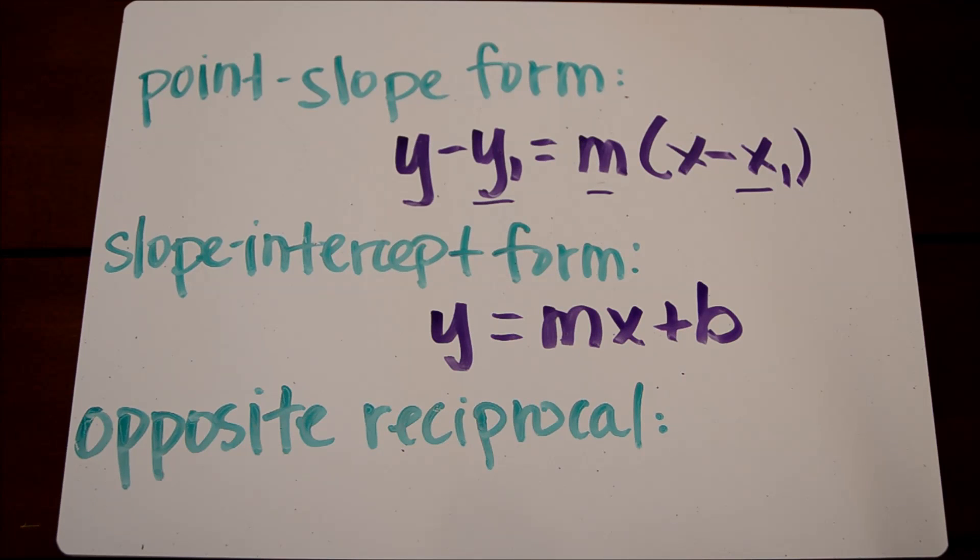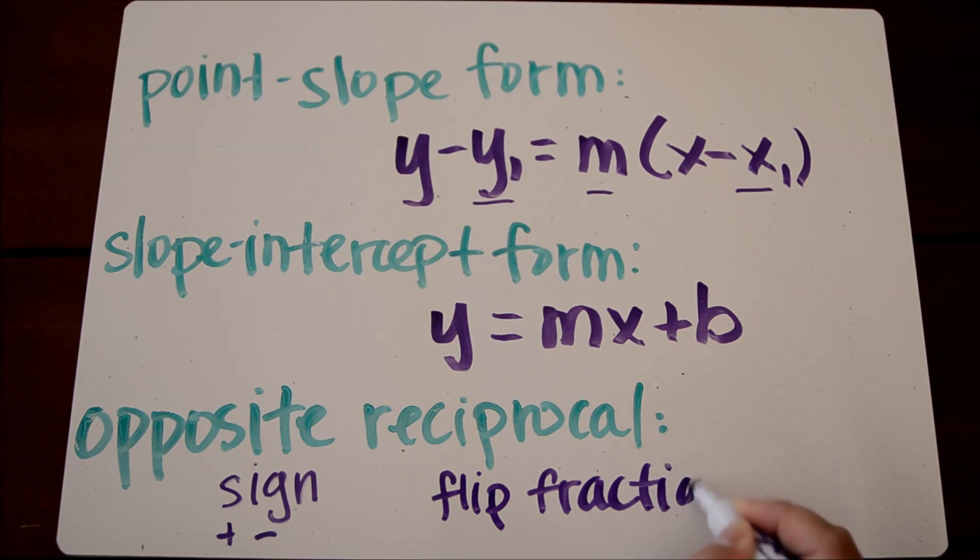Opposite reciprocal refers to two different things. When I say opposite during this tutorial, I mean opposite sign. So if it's positive, it becomes negative, negative becomes positive. Reciprocal means we're going to flip our fraction. So two-thirds would become three-halves, or three over two.